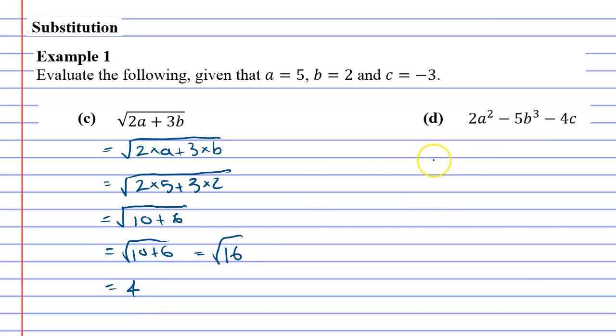Question D now. Let's put our multiplication in first. 2 times A squared minus 5 times B cubed minus 4 times C. And now we're going to substitute our numbers. So A is 5, 2 times 5 squared. B is 2, 2 cubed. And C, this is the first time we've used C, is a negative number, negative 3. So we're timesing by negative 3.